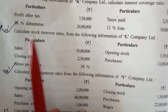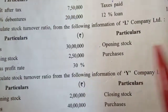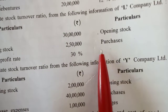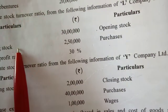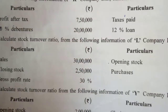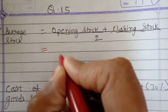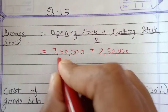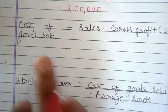Question number 15: Calculate stock turnover ratio for Al Company Limited. Given: sales, closing stock, gross profit rate, opening stock, and purchases. The formula is cost of goods sold upon average stock. Average stock equals opening stock plus closing stock divided by 2: Rs. 3,50,000 plus Rs. 2,50,000 divided by 2, giving average stock of Rs. 3,00,000.